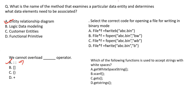Select the correct code for opening a file for writing in binary mode. Option C is the correct answer. Here 'w' stands for writing and 'b' is for binary mode.